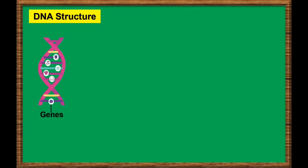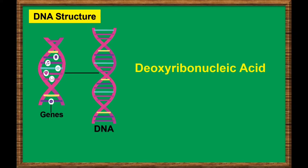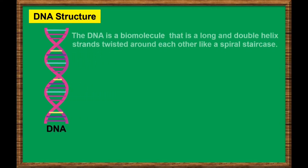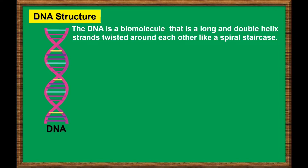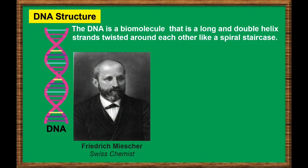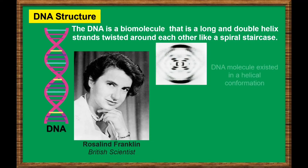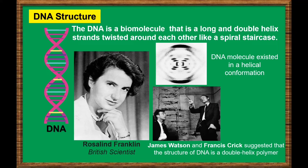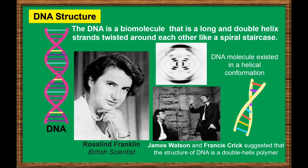Genes are made of a chemical called DNA, which is short for deoxyribonucleic acid. The DNA is a biomolecule that is a long double helix strand twisted around each other like a spiral staircase. DNA was first identified in the late 1860s by Swiss chemist Friedrich Mischer. The British scientist Rosalind L.C. Franklin applied X-ray diffraction methods to study DNA and discovered that the DNA molecule existed in a helical or spiral conformation. The work of Rosalind Franklin laid the foundation for James Watson and Francis Crick to suggest in 1953 that the structure of DNA is a double helix polymer — a spiral consisting of two DNA strands wound around each other.